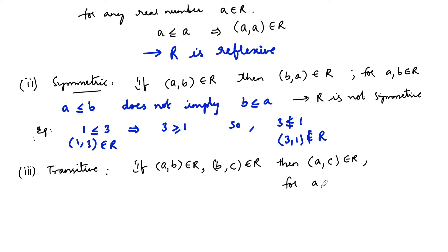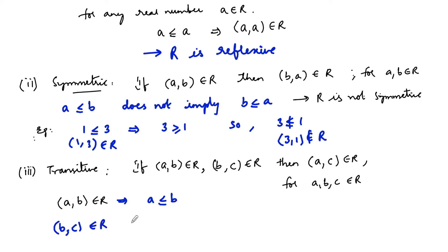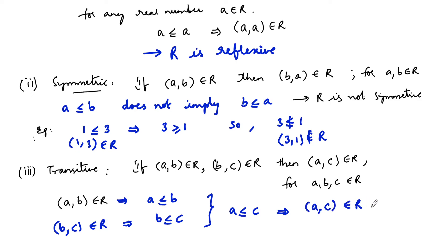For real numbers a, b, c: (a, b) belongs to R implies a ≤ b, and (b, c) belongs to R implies b ≤ c. From both of these, we can say that a ≤ c, which implies (a, c) belongs to the relation. This satisfies the condition, so for any real numbers a, b, c, since a ≤ b and b ≤ c implies a ≤ c, the relation is transitive.